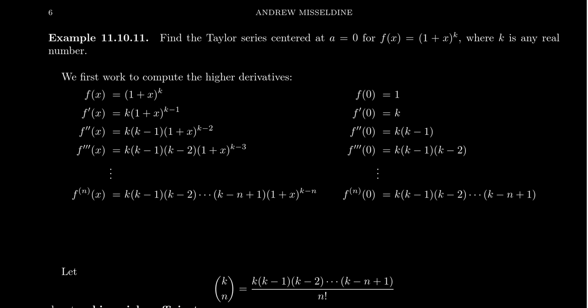For Taylor's formula, the coefficient in a Taylor series is the nth derivative evaluated at the center divided by n factorial. We evaluate these derivatives at the center, which is zero. For the zeroth derivative, plugging in zero gives just one, because one to any power is one, even the kth power.